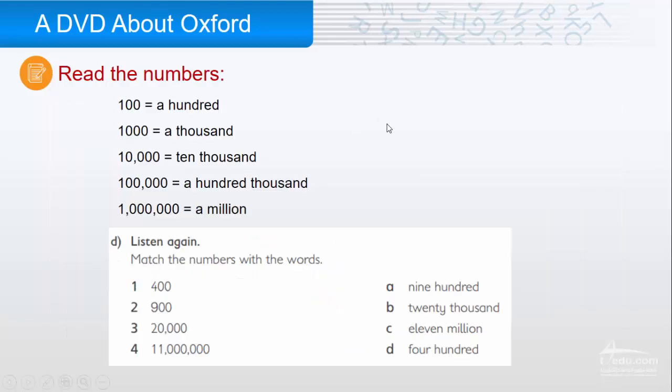Now, let's read the numbers. One zero zero is a hundred. One and three zeros a thousand. One and four zeros is ten thousand. Five zeros is a hundred thousand. One and six zeros is a million. A hundred. A thousand. Ten thousand. A hundred thousand. A million.